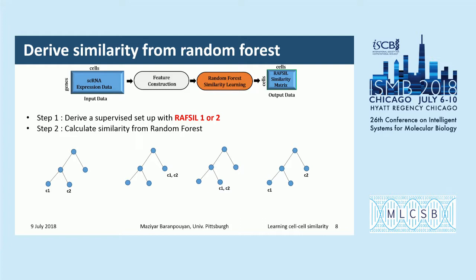Using this technique, we can calculate pairwise similarity between all cells. In the case of RAFSIL-2, when we have multiple random forests, the final similarity matrix is averaged over all the generated matrices obtained from each random forest.